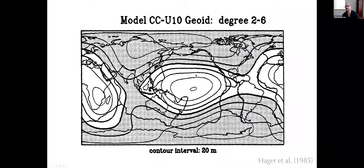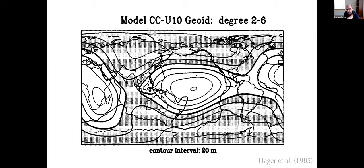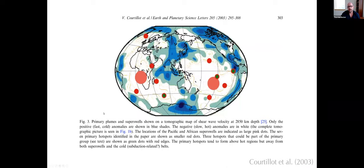My angle came out of the school started by Brad Hager and Rick O'Connell, who was my advisor, including lots of work by Alex Forte, Yannick Rickard, and many more. The idea was that you couldn't just generally link plate tectonics to mantle convection, but you could take structure from seismic tomography, interpret it as density, and then drive mantle flow models. Here's an example from Brad Hager's work using very early tomography, showing that the geoid and geoid deflection predicted by these models based on tomography matches what is seen.